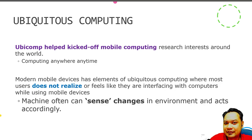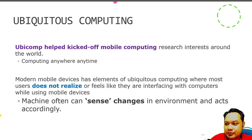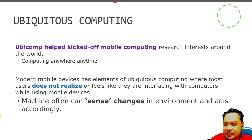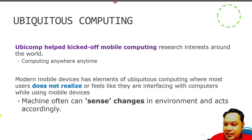Users sometimes take photos but do not realize that while taking photos they are interacting with a computer. Similarly, they do not realize they are interacting with a computer while messaging on WhatsApp or using an instant messenger. These are the core principles of the Ubiquitous Computing concept. Additionally, mobile devices have sensors which can sense the environment and then react and act accordingly to the environment.